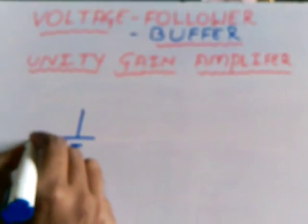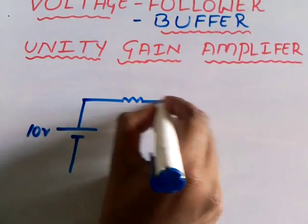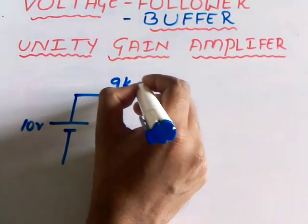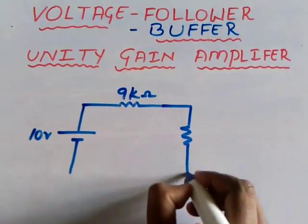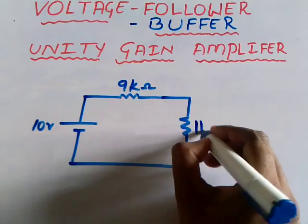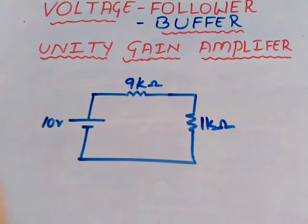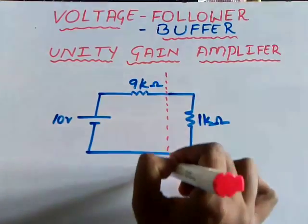Let us consider a circuit which is having 10 volts, and which is having a source resistance of, let us consider, 9 kilo-ohm, and let us consider the load resistance of almost all equal to 1 kilo-ohm. Okay. In the practical world, this is the circuit which is representing the Thevenin equivalent.